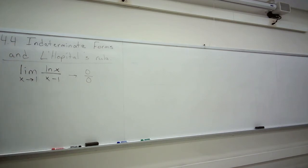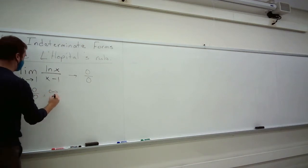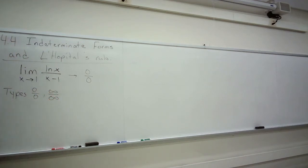There are others we're going to talk about today. The first two types are zero over zero and infinity over infinity.